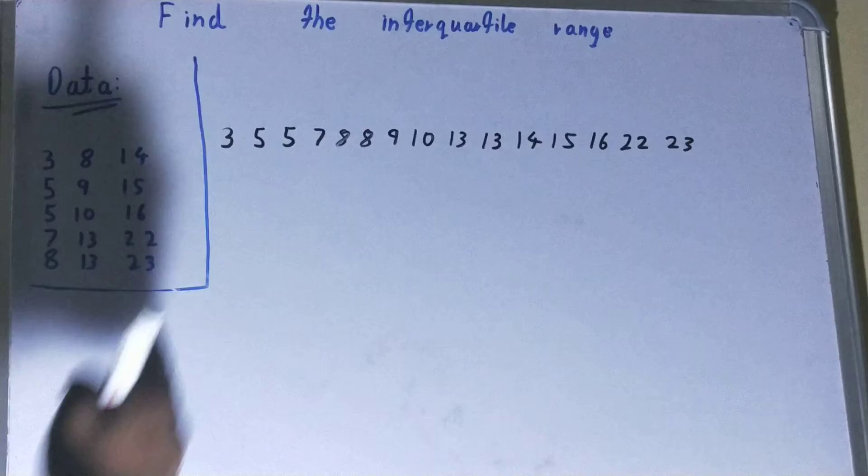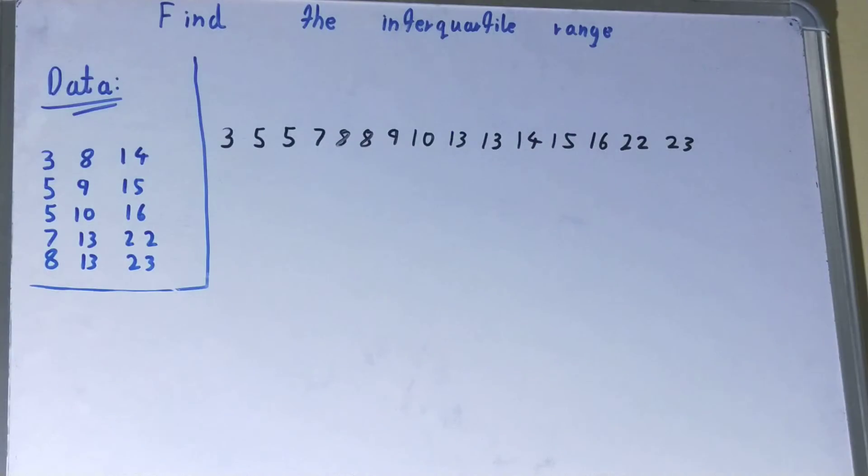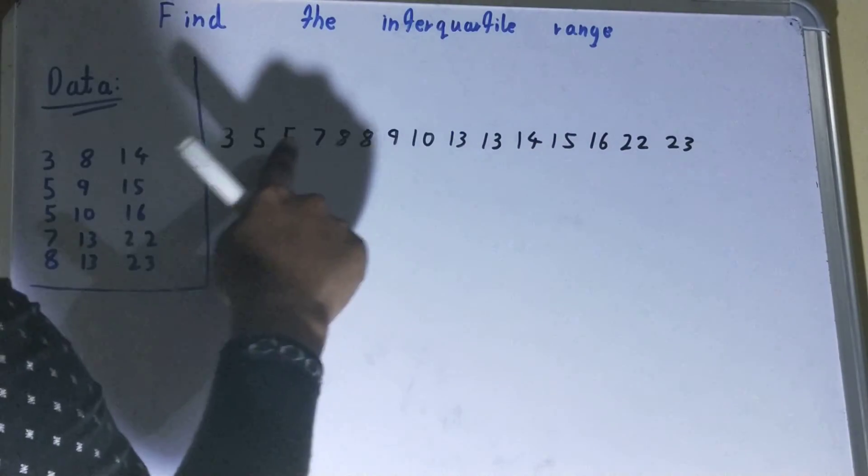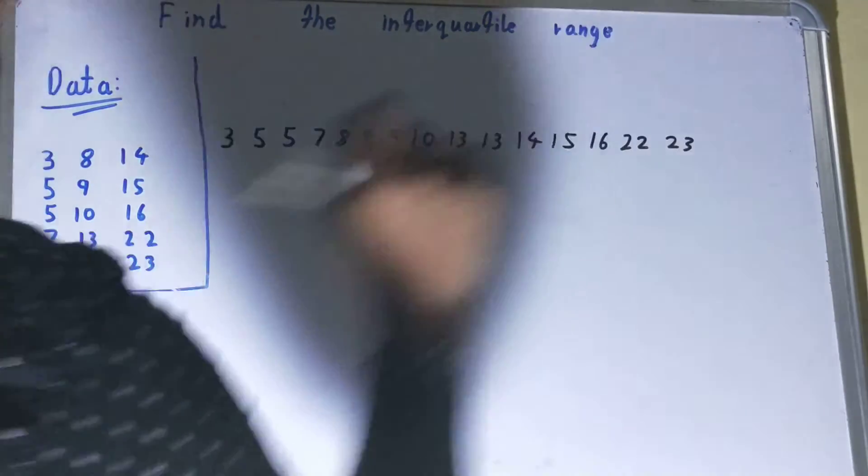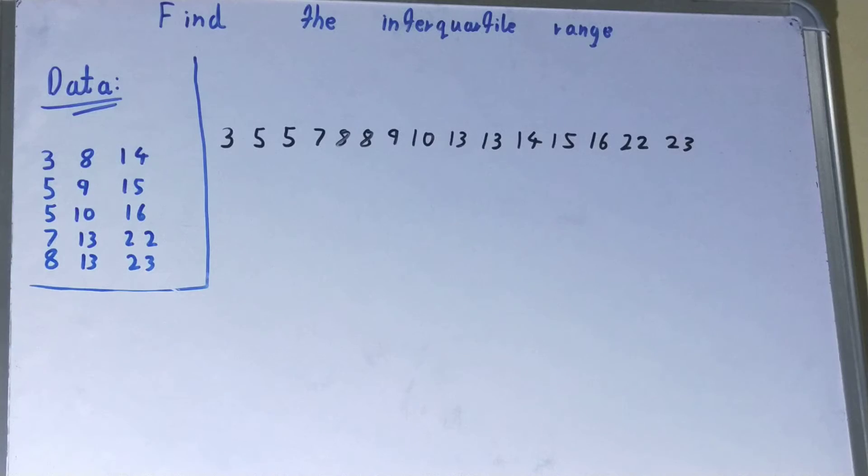Then what you need to do is you need to count the number of data points you have. That is 1, 2, 3, 4, 5, 6, 7, 8, 9, 10, 11, 12, 13, 14, 15. We have 15, right? That is an odd number.